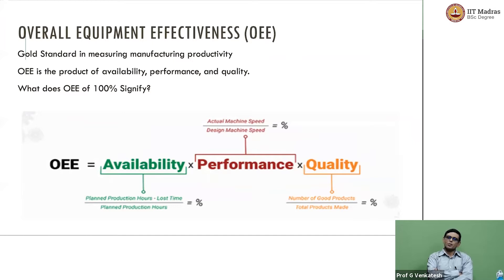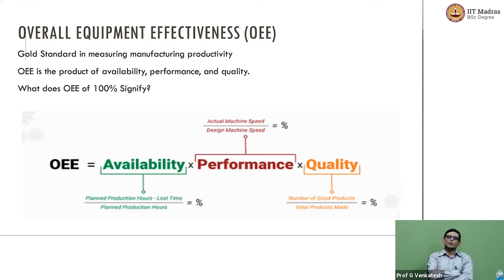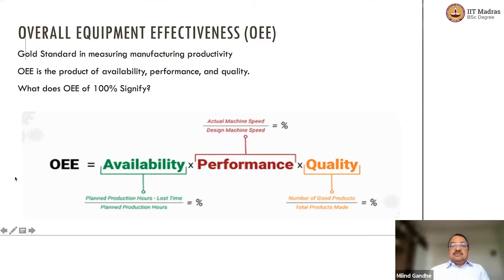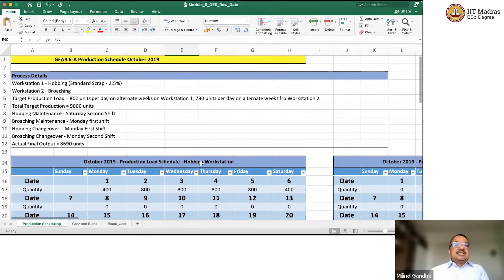The first one is availability. You have planned for some number of hours, you lost some hours, so you subtract the number of lost hours. Basically you are trying to compute how many hours you did not lose out of the total planned hours. In our dataset, there is only one way to lose a shift — you are going to lose 6 hours. We will go back to this gear 6 data.